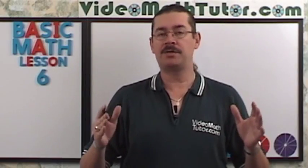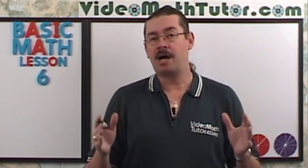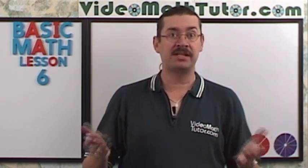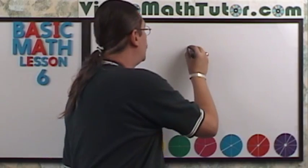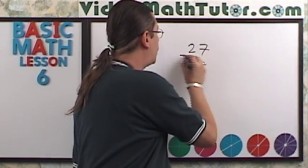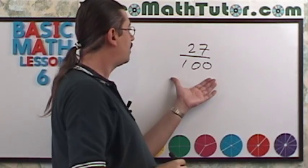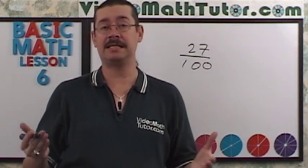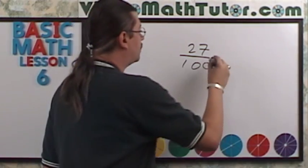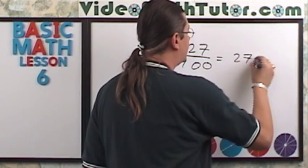Now we don't have to always use some kind of a grid. Any collection of 100 objects can be used to represent percentage. For example, look at this group of stars. 27 of them are shaded. So we can write down 27 stars out of 100 stars. Since our denominator is 100, that automatically can be easily represented as a percentage. So this is just 27%.